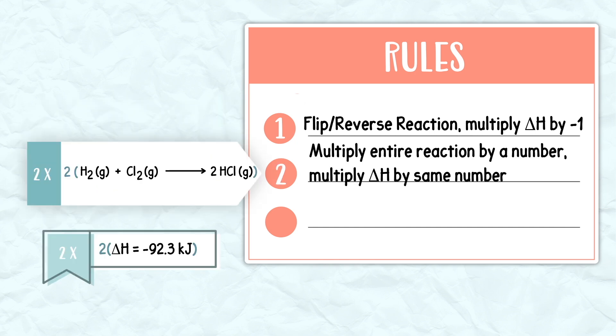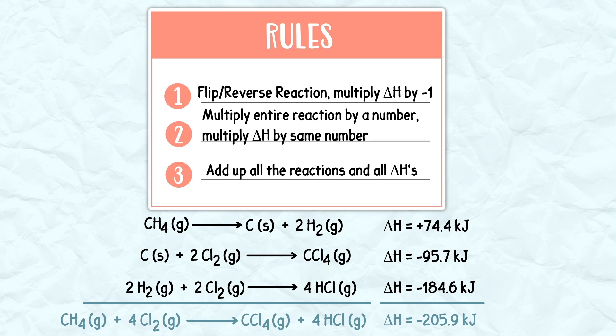Rule two is whenever you multiply the entire reaction by a number, you must multiply the change in enthalpy by that same number. And rule three is to add up all the reactions and all of the changes in enthalpies together.